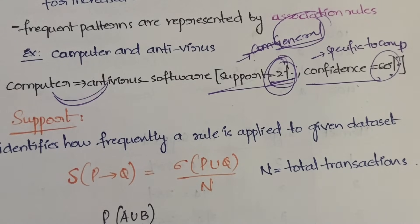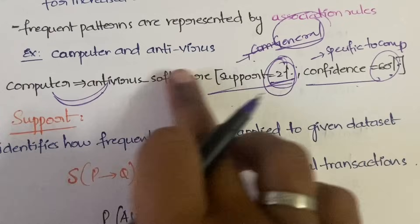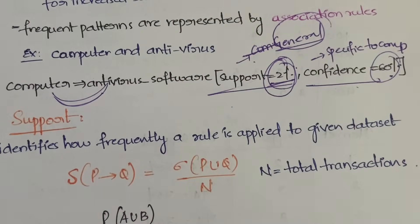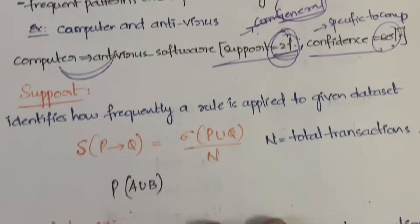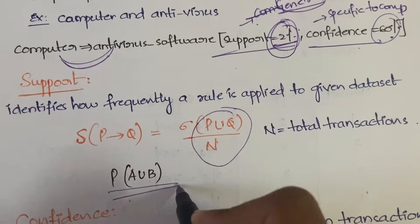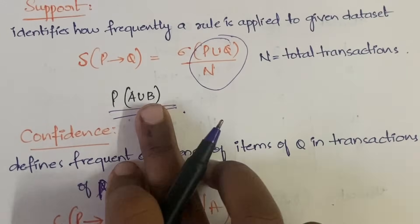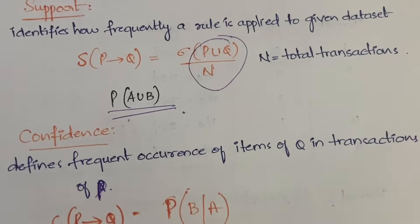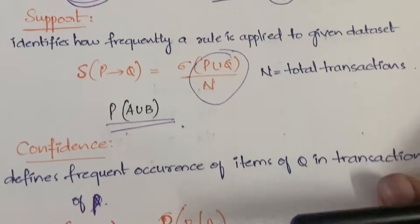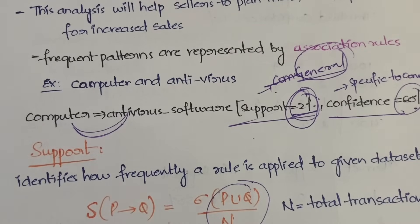Frequent patterns are represented using association rules written in terms of support and confidence. To summarize: for support, use P(A ∪ B); for confidence, use P(B|A). That's all about frequent patterns. In the next video, I'll be explaining mining methods. Thanks for watching — if you have any doubts, let me know in the comment section.